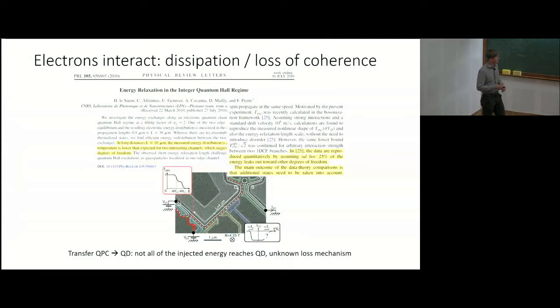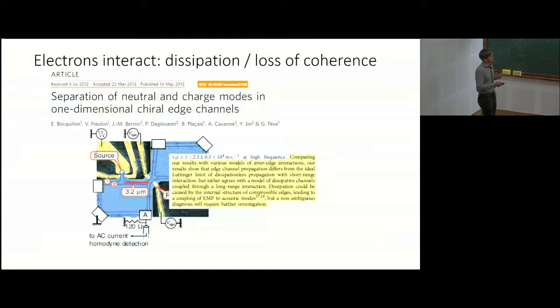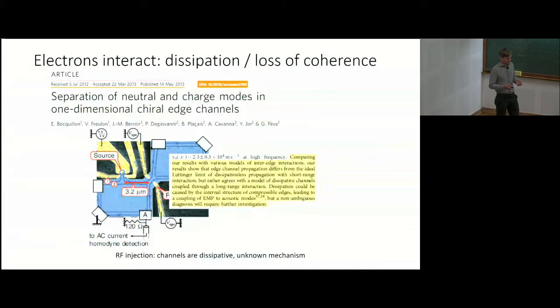In a further experiment, a non-equilibrium distribution is introduced into an n equals 2 edge by an RF circuit, and there is essentially the same problem. The distribution propagates either to an ohmic contact or through a QPC so that part of the distribution travels in another part of the sample. In this way the authors were able to show that the interaction between the charge carriers is finite ranged, and here too there is an energy loss due to a mechanism that has so far not been determined.